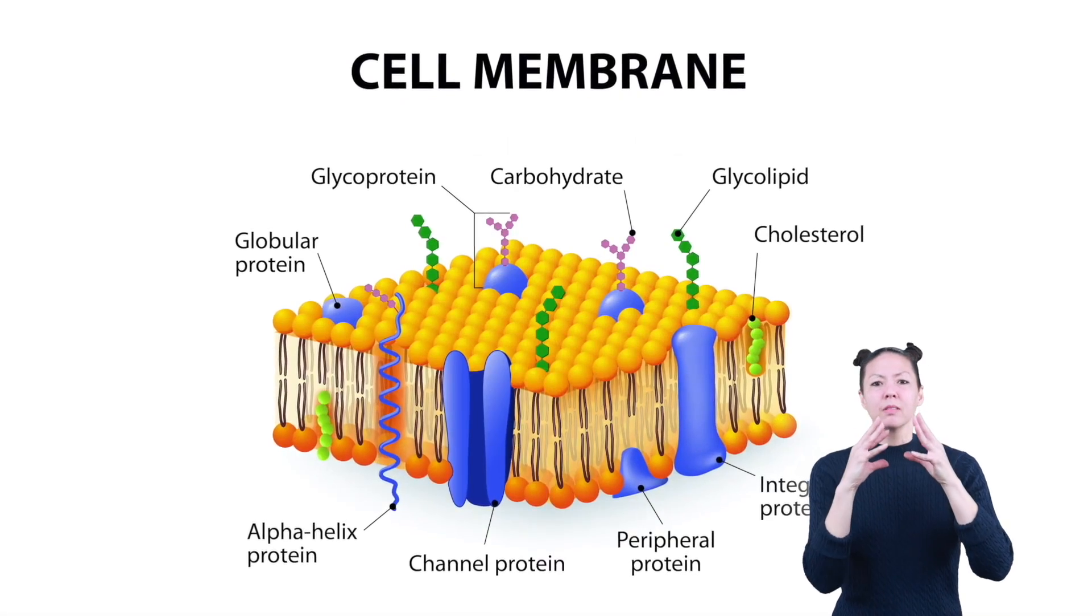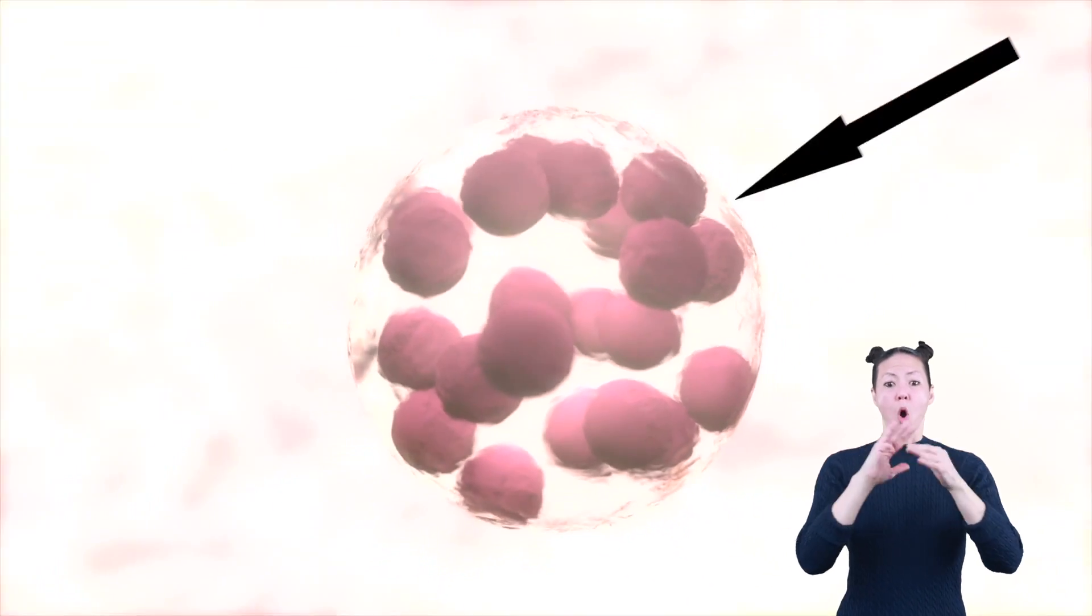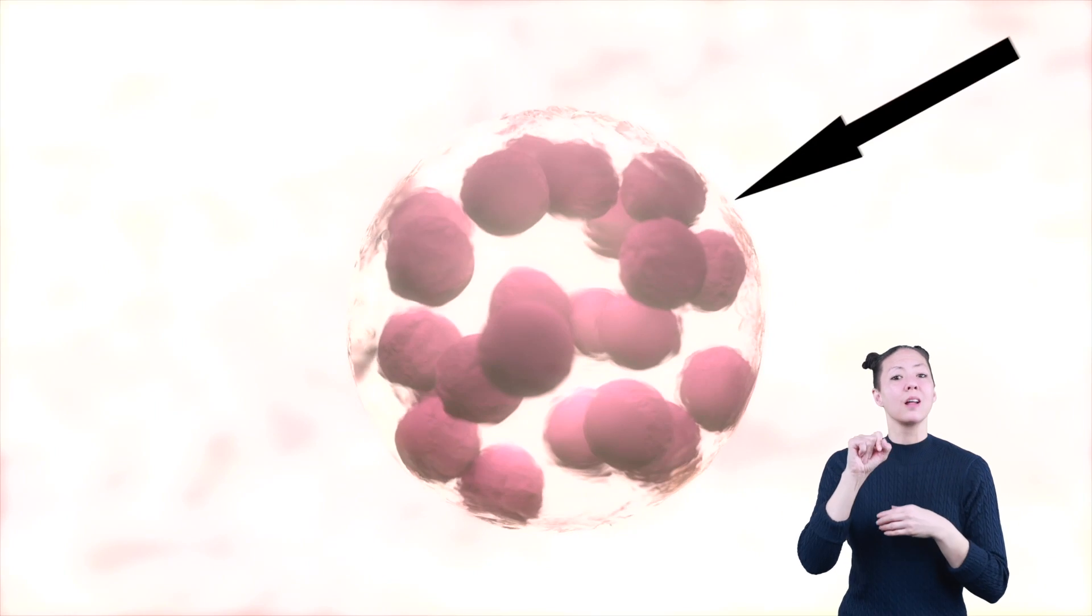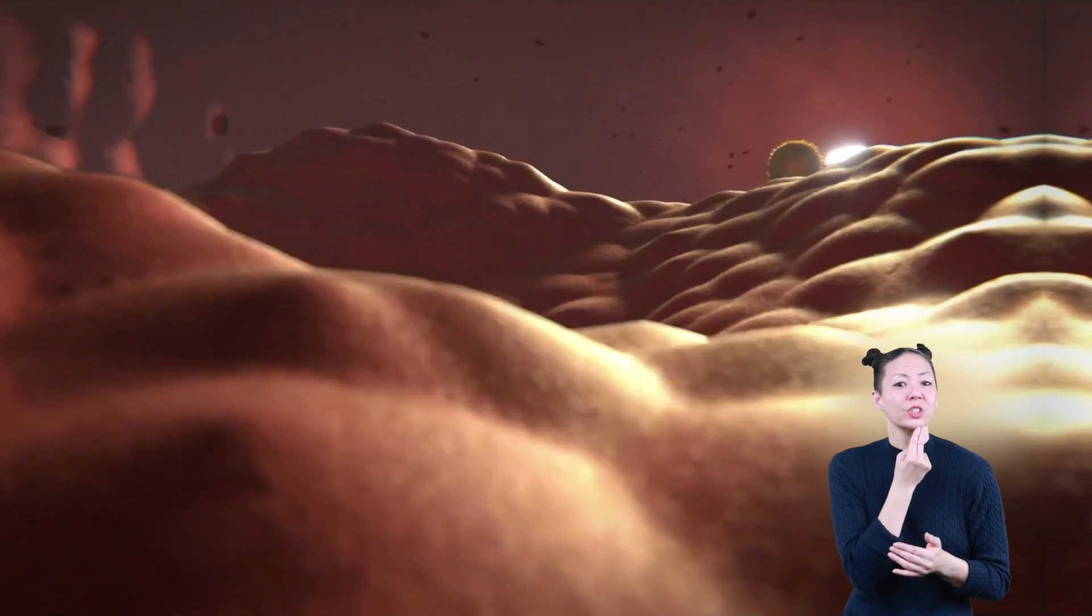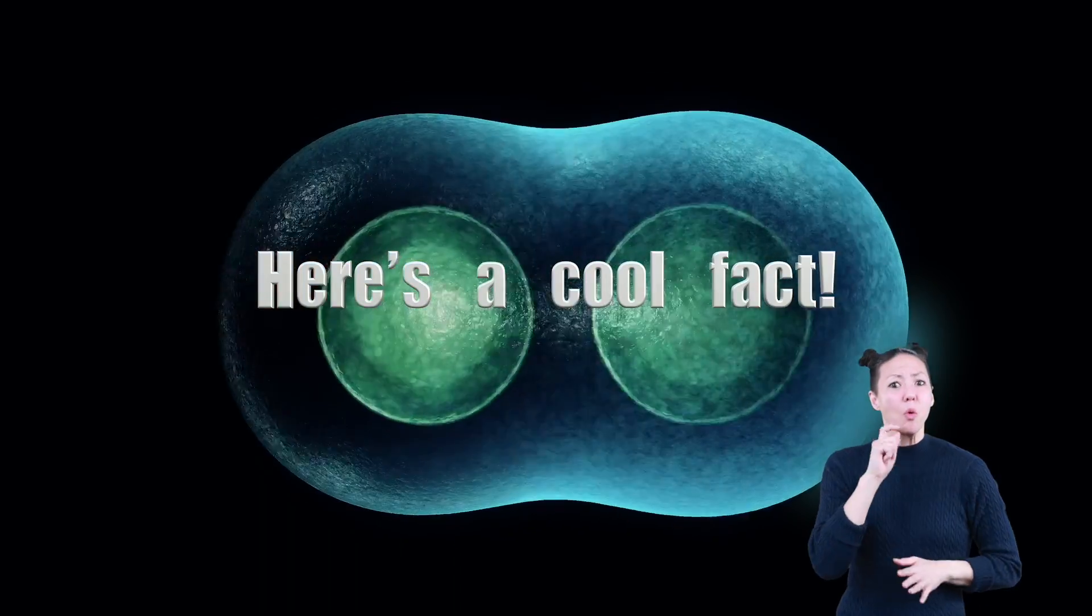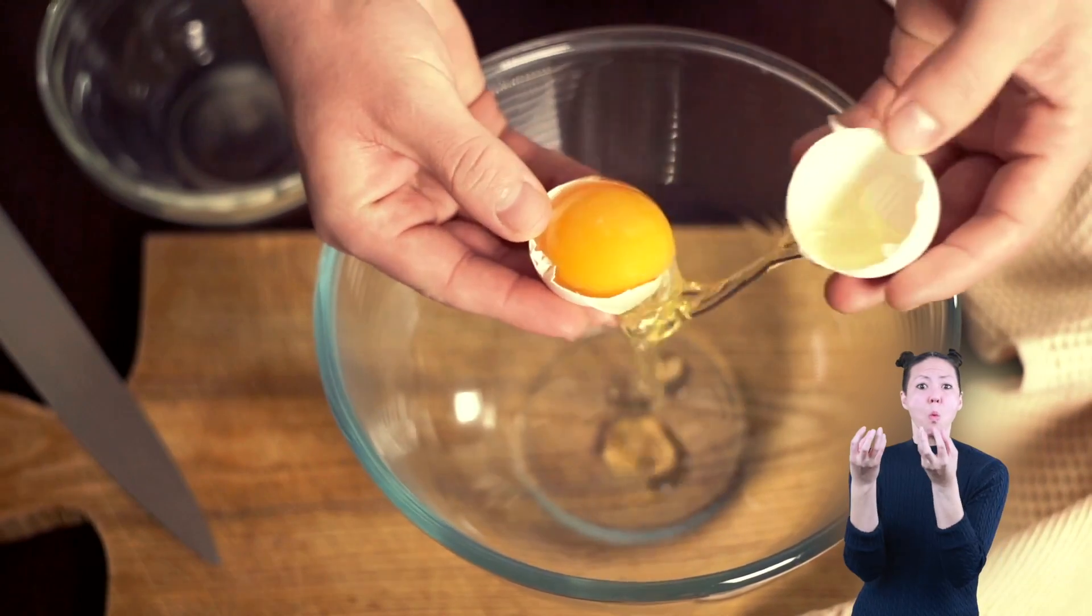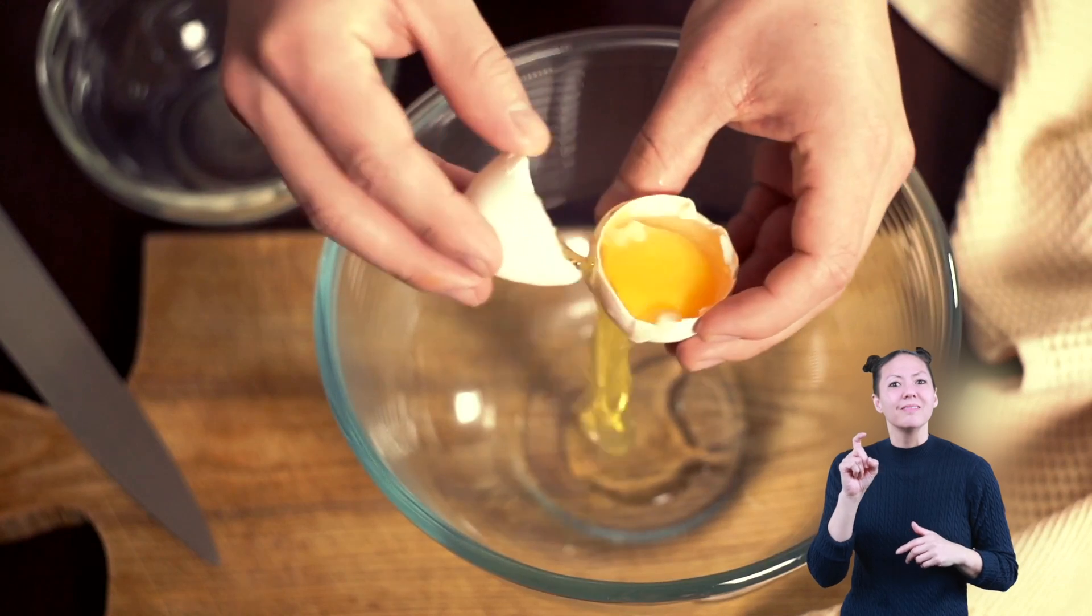The cell membrane is made up of fats and proteins. It is the wall around the cell. It keeps important things inside like nutrients and unwanted things out like waste. Here's a cool fact. Did you know that each time you break open an egg, you see a large cell?